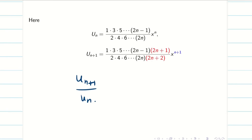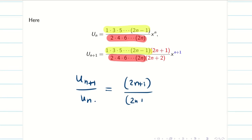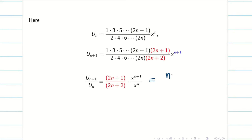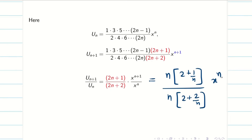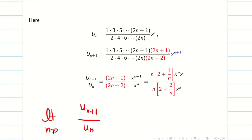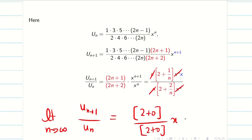Now find u_{n+1}/u_n. The common terms in numerator and denominator cancel up to 2n, leaving (2n+1)/(2n+2) · x. Simplifying by taking n outside: (2 + 1/n) / (2 + 2/n) · x. Applying limit n→∞, the 1/n and 2/n terms go to 0, giving (2/2)·x = x. So the limit of u_{n+1}/u_n equals x.